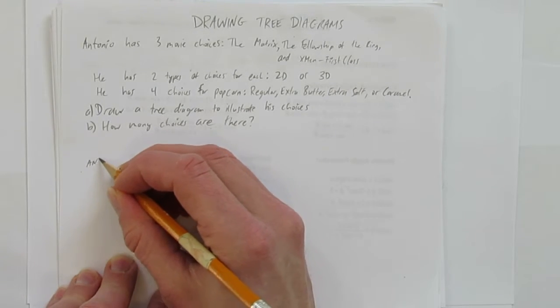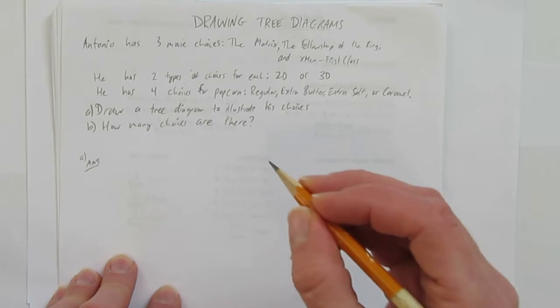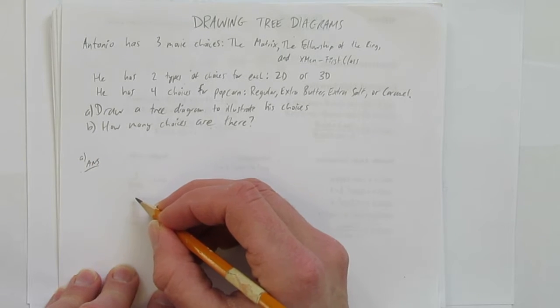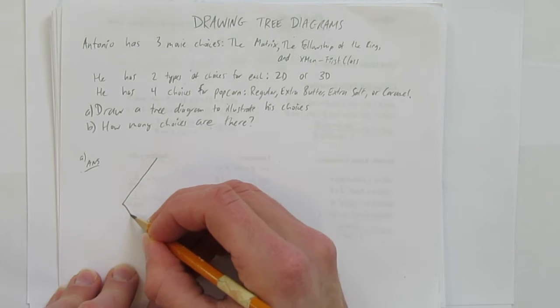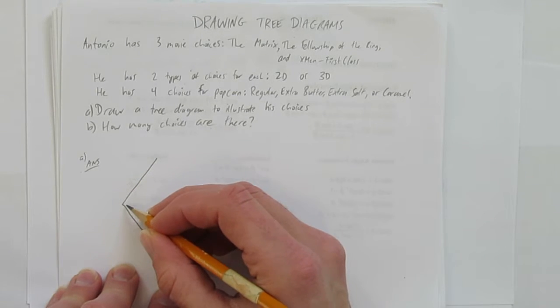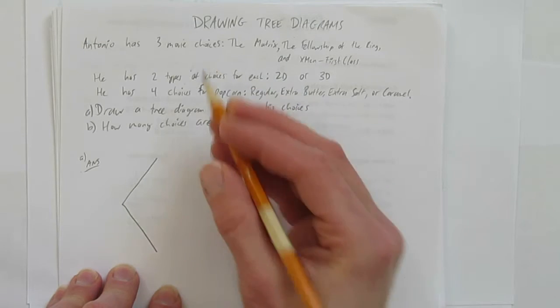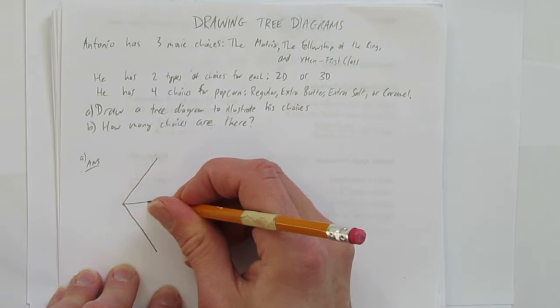So the answer for Part A is start with two big branches. We're going to need a lot of room for this tree diagram. So I'm going to make two big branches here. You have to have a starting point. And then we have three movie choices. So we start with three branches.